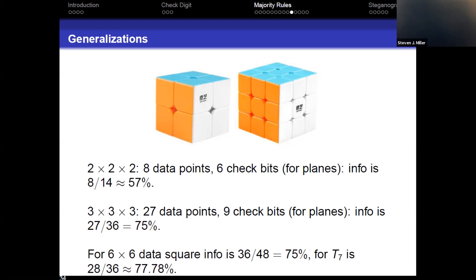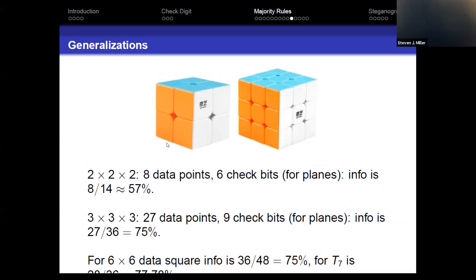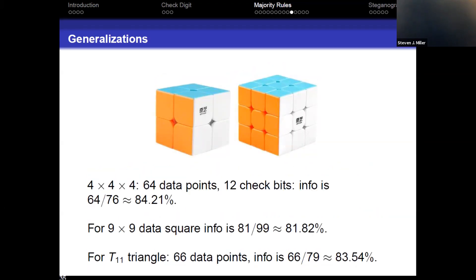And just to put things in comparison, if I do a six by six data square, I would get 75%, but I would have to use 48 pieces of information to transmit 36. If I use the triangle, the seventh triangle number, I have 36 pieces that I send, 36 bits, so the same as the three by three cube, 77.78% efficiency. So I just barely win with the triangle. I'm winning by one over 36. So already the three by three cube is pretty close. You could, of course, then go to the four by four cube and higher and higher. The four by four by four cube would be 64 data points, 12 check digits. So already at 84% roughly. For the nine by nine data square, it's only 81.82%. For the T11 triangle, it's 83.54%. So at this point, we've now beaten the triangle.